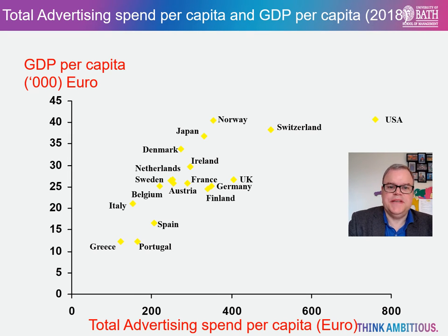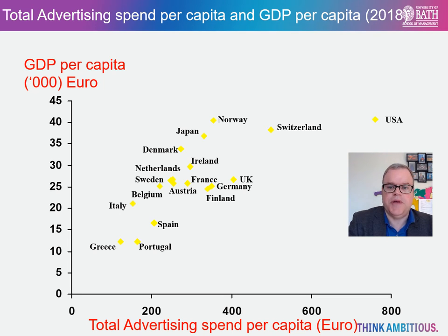There also appears to be a positive relationship between income per capita and advertising expenditure per capita. This scatterplot takes advertising expenditure per capita and plots it against gross domestic product per capita, which is a measure of national income, for various developed countries. You can clearly see a positive relationship, with countries with higher levels of income per head also generally having higher levels of advertising expenditure per head.